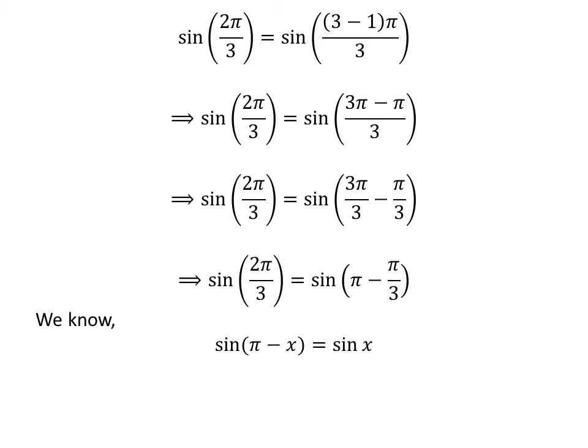As we know, the trigonometry identity sine of pi minus x is equal to sine of x. The proof of this trigonometry identity has been explained in the video appearing in the upper right corner. The link of the video has also been mentioned in the description section.